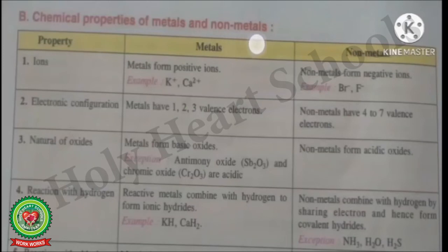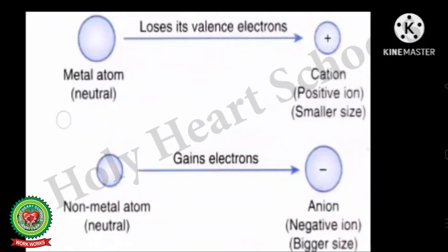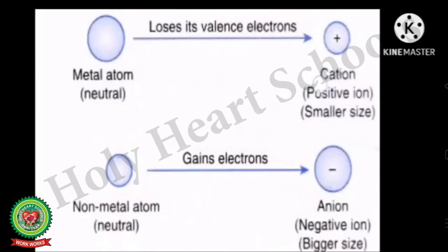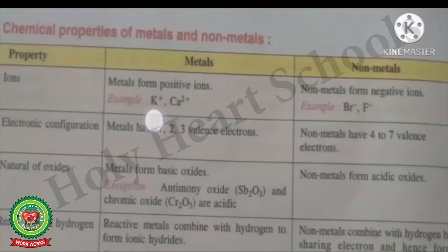We will now discuss chemical properties of metals and non-metals. The first property is ion formation. Metals form positive ions and non-metals form negative ions. A neutral metal atom loses its valence electrons to form positively charged ions called cations. On the other hand, a neutral non-metal atom gains electrons to form negatively charged ions called anions.